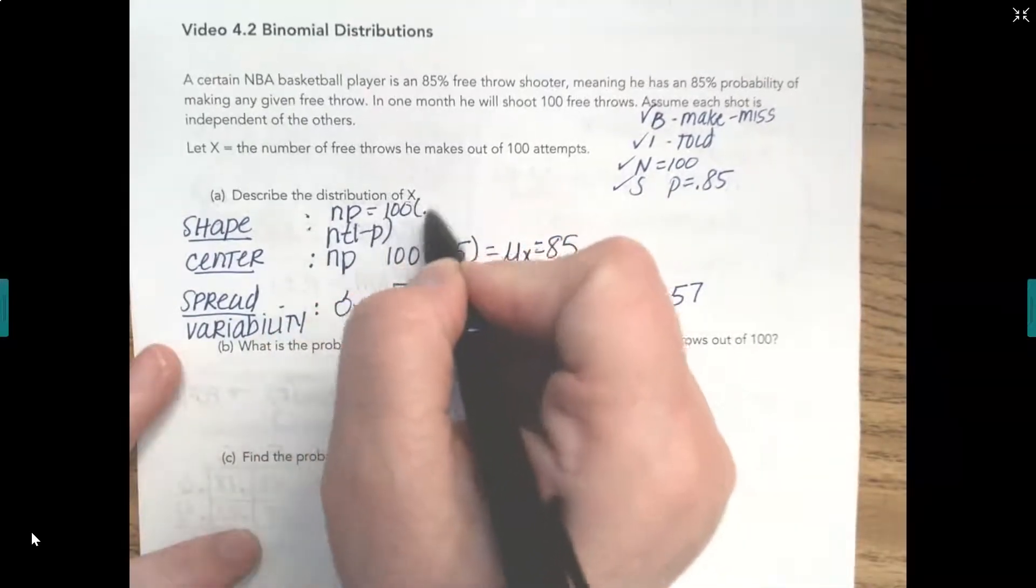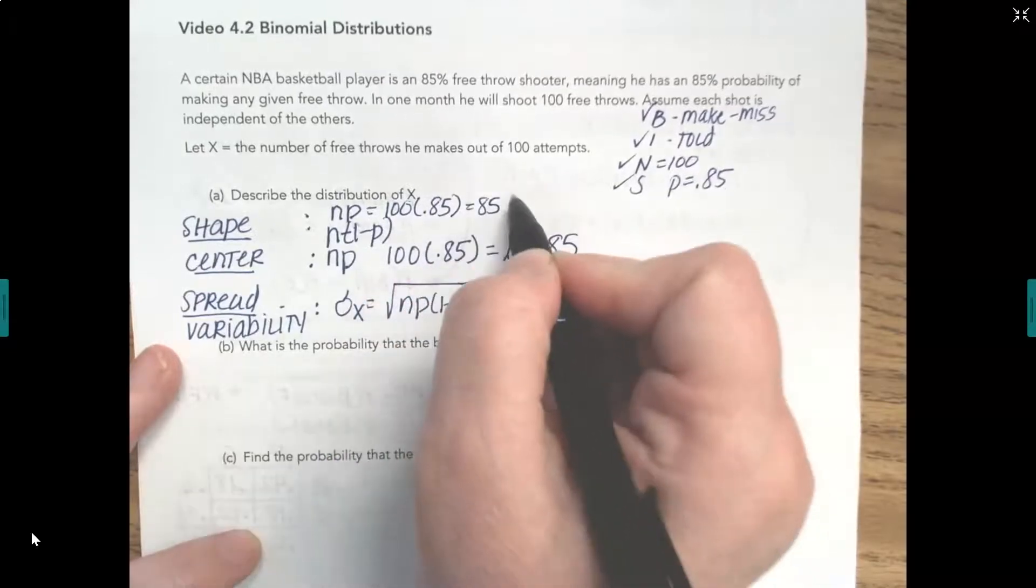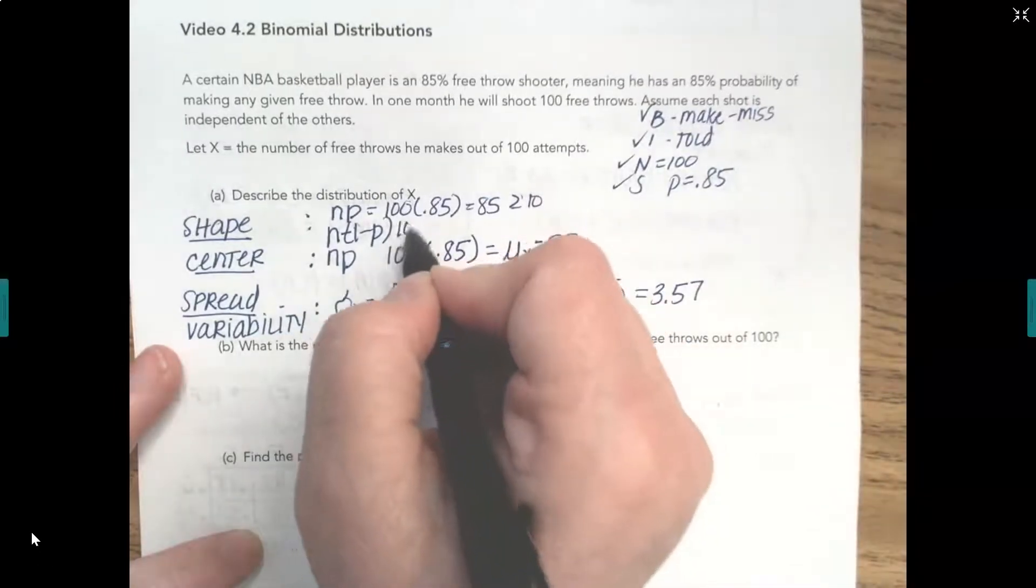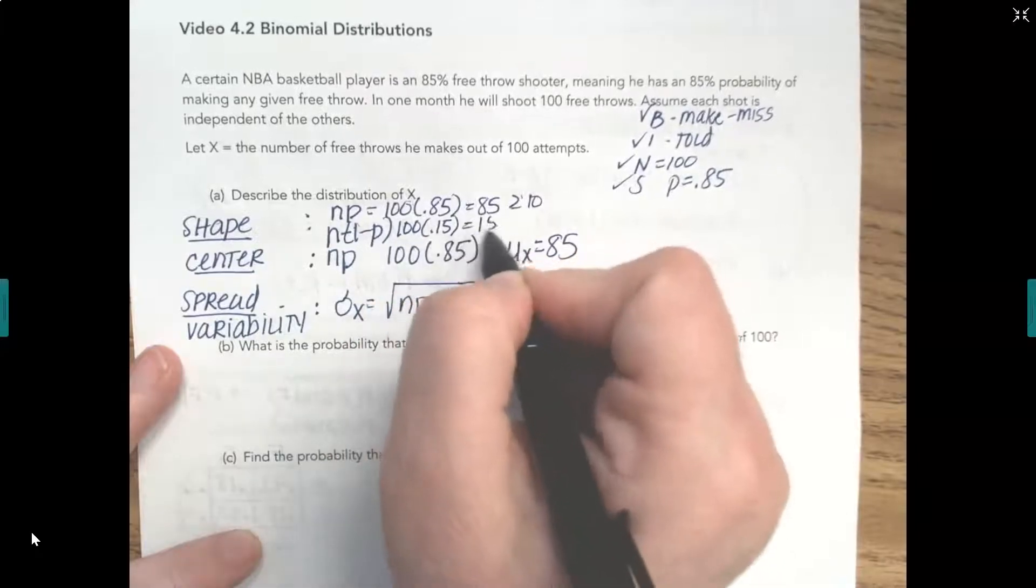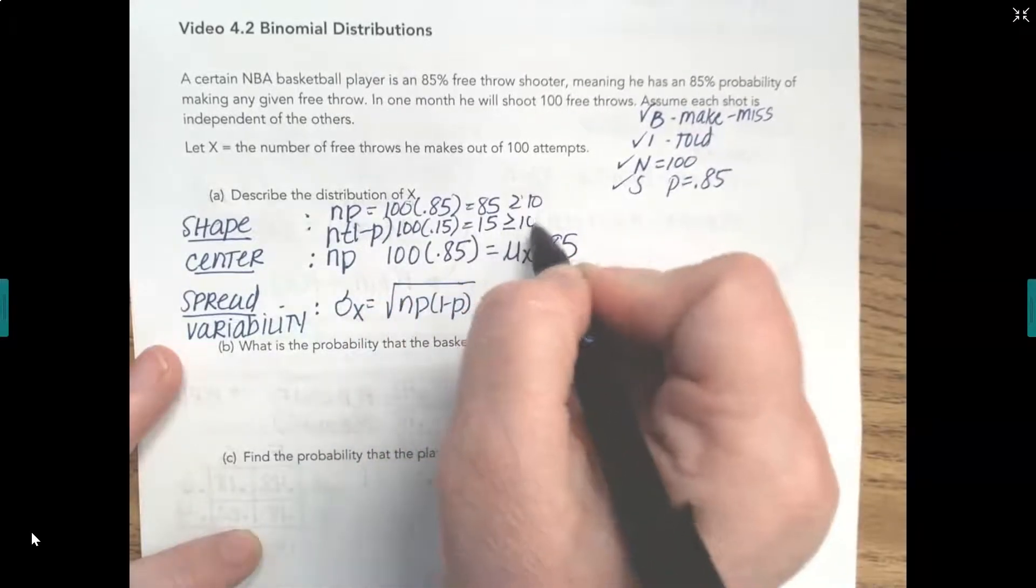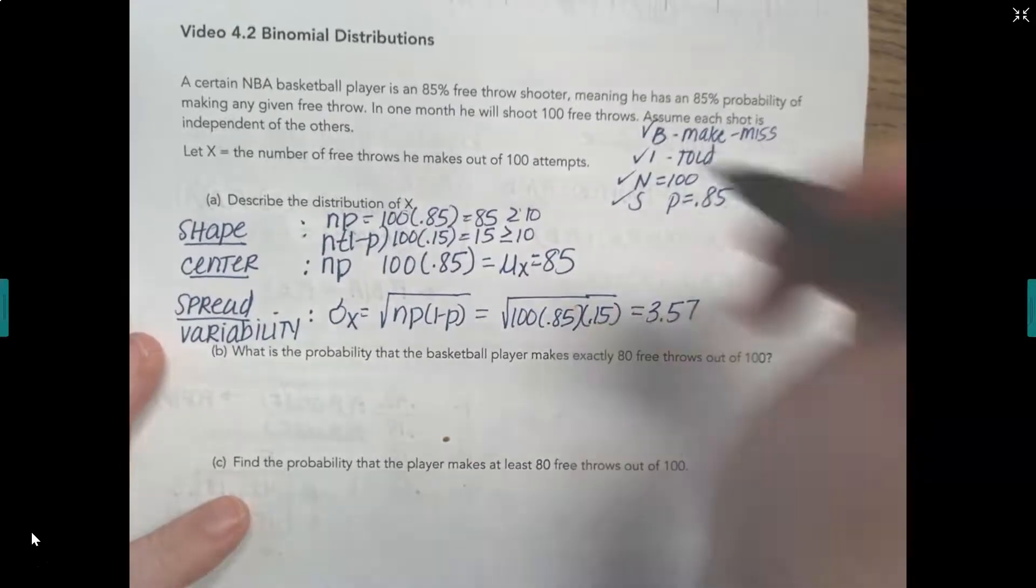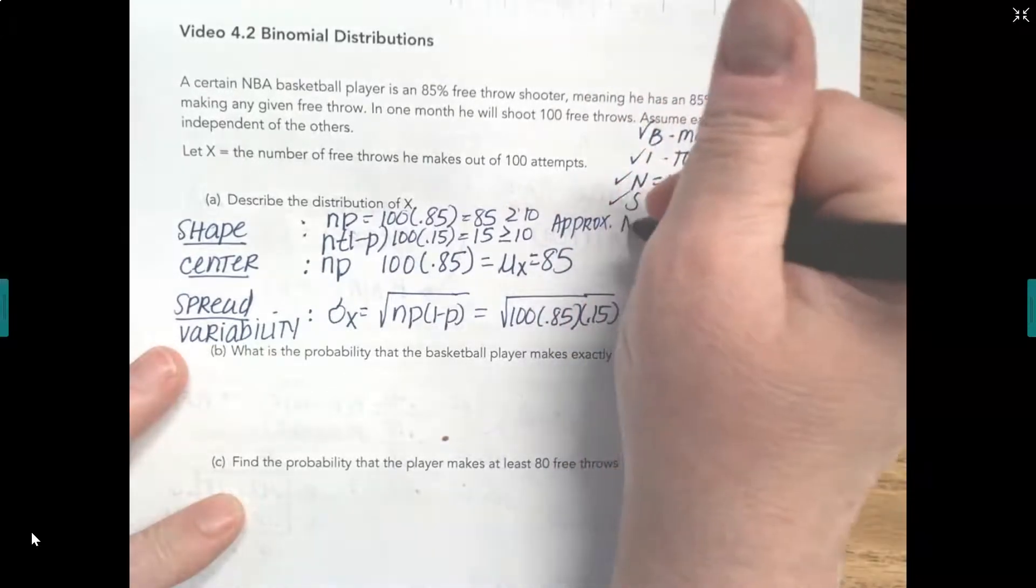We already actually did N times P, because that's also the mean. N times P is 85, which is greater than or equal to 10. And N times 1 minus P would be 100 times 0.15, which is 15, which is also greater than or equal to 10. We have at least 10 successes and 10 failures, which means our distribution is approximately normal.